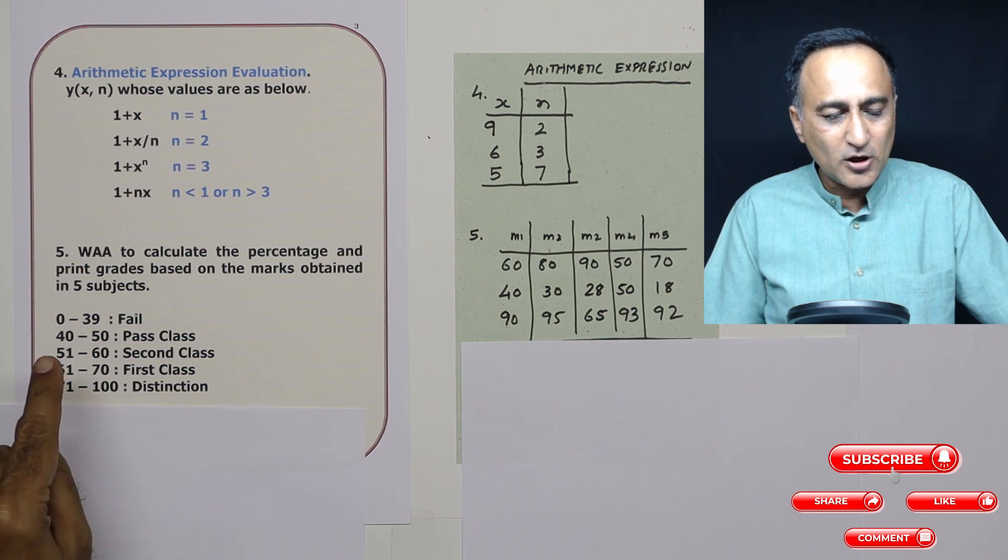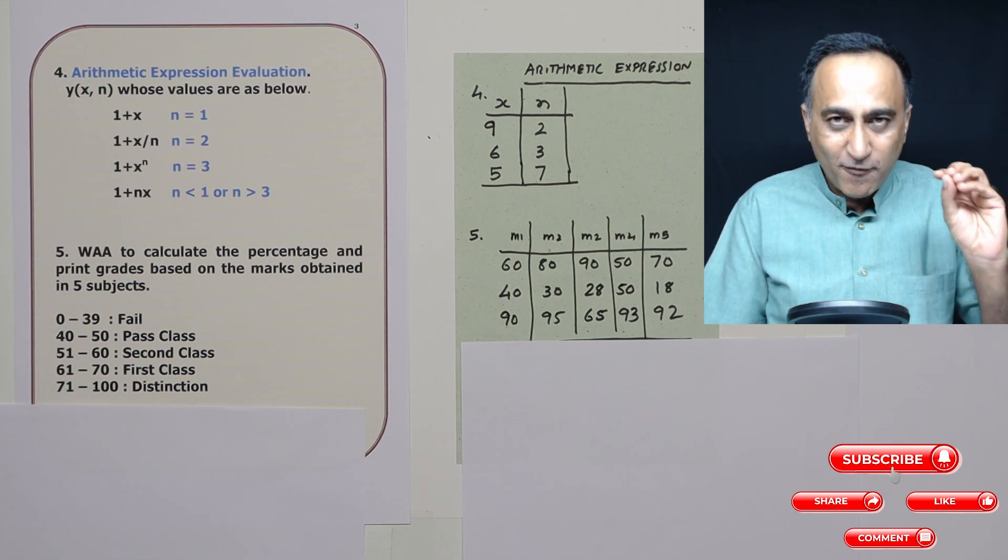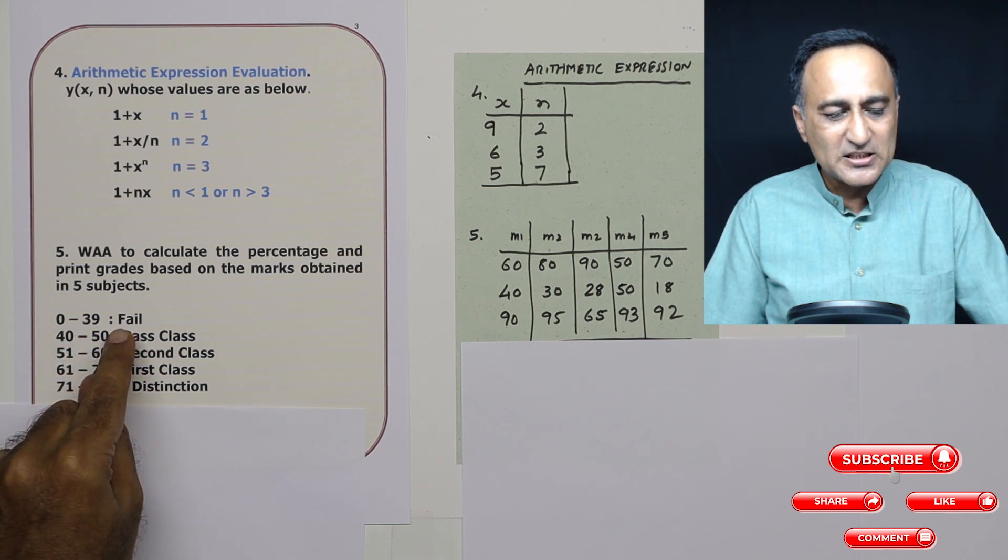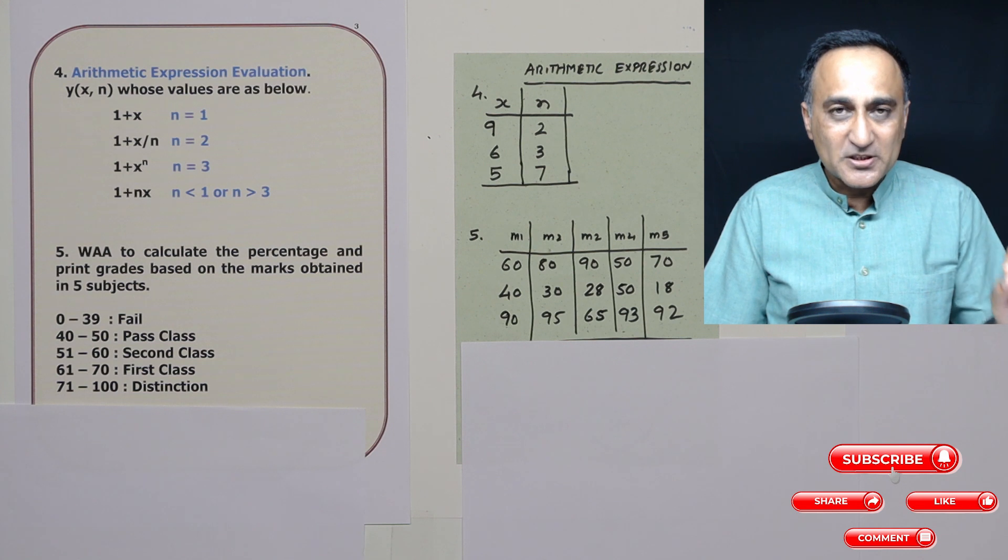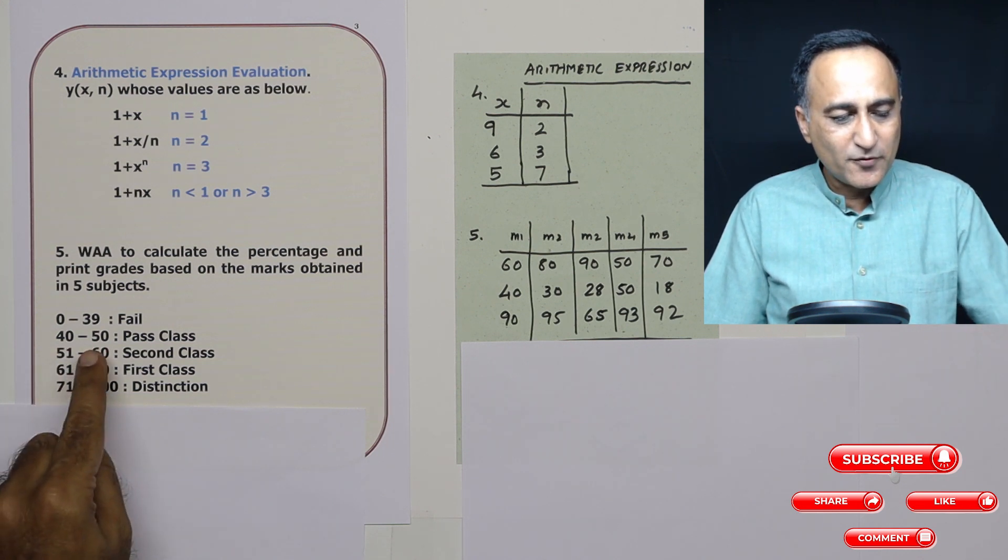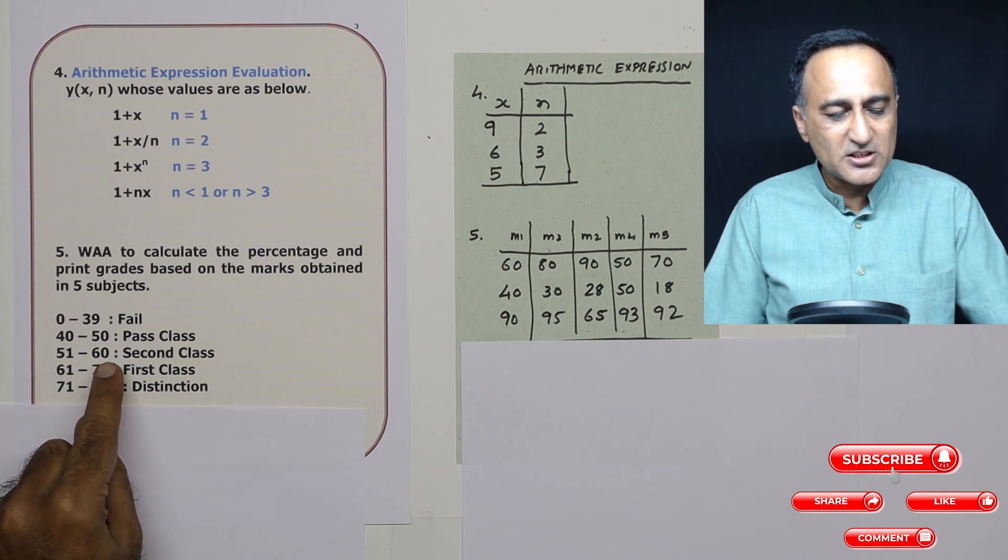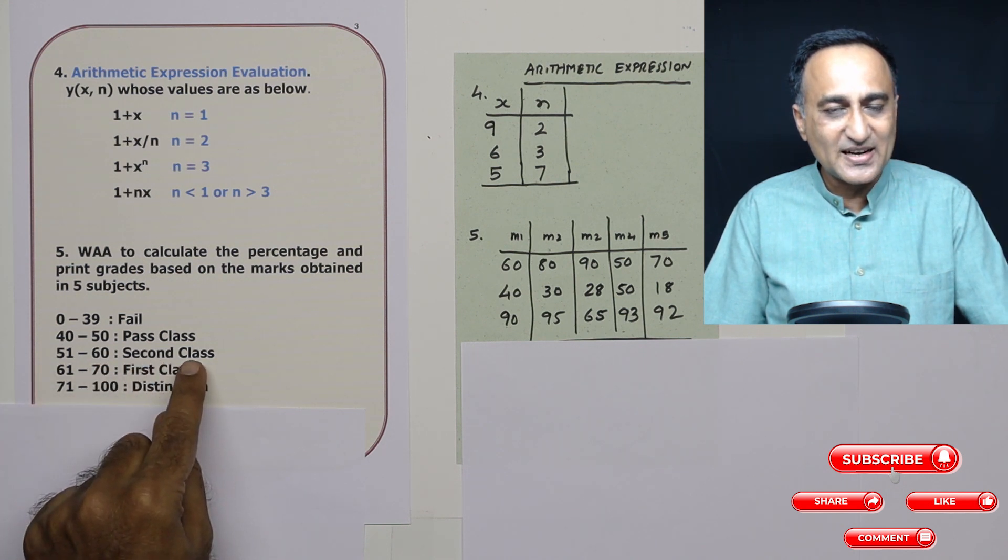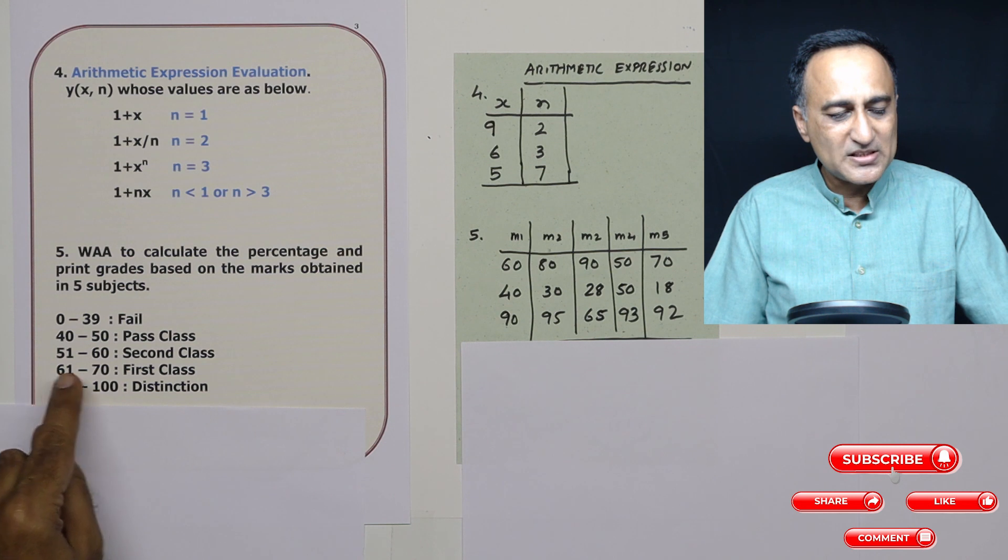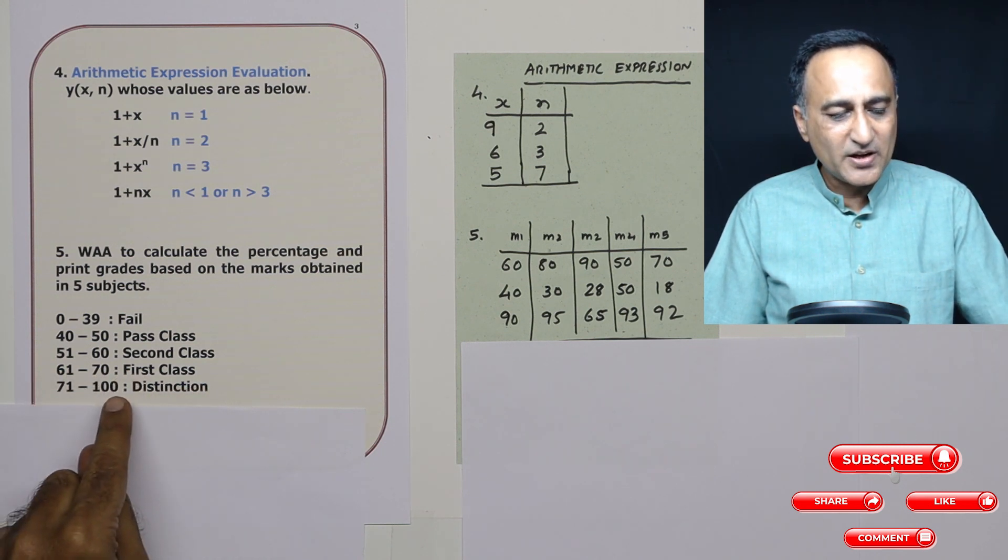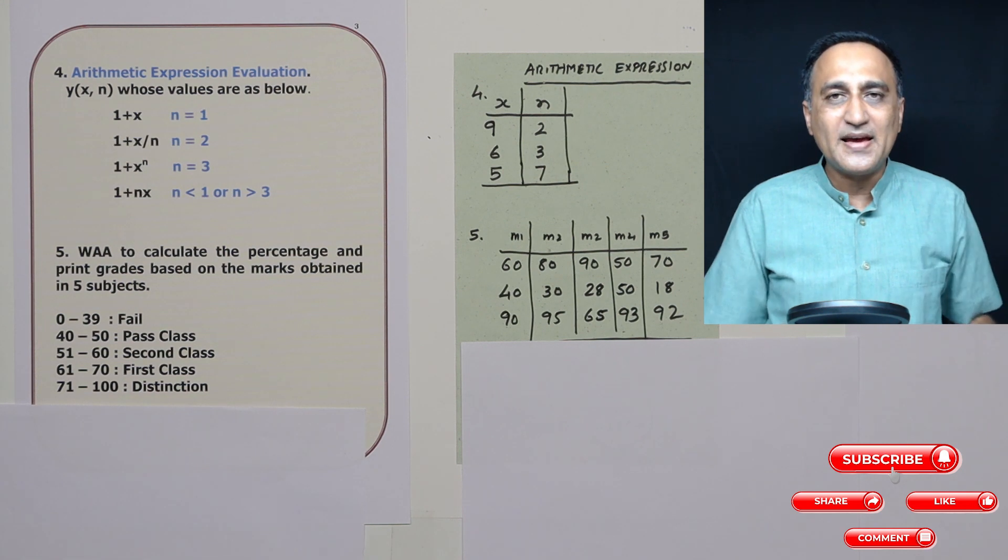So if the total average marks or the percentage marks of five subjects is between 0 to 39, you will declare a candidate as fail. If the percentage of five subjects is between 40 to 50, the candidate is a pass class. Between 51 to 60 percentage, he or she is the second class grade. Between 61 to 70, he is a first class grade. And between 71 to 100, that person will be graded as distinction.